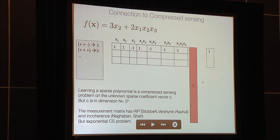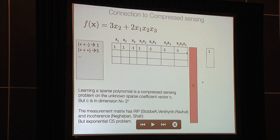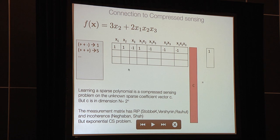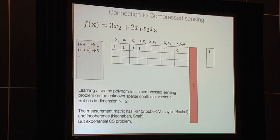One thing you can prove is that this measurement matrix is a good compressed sensing matrix. The monkey chooses x1 through xn, and the rest of the entries are fully determined. One paper showed this matrix has RIP, giving their sample complexity; the second paper by Nagaban and Shah shows incoherence — the dot product between any two columns is small — giving a different sample complexity. But both ultimately need to solve a compressed sensing problem in exponential dimension, so the running time is exponential.